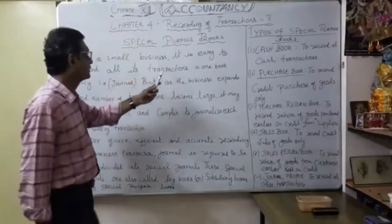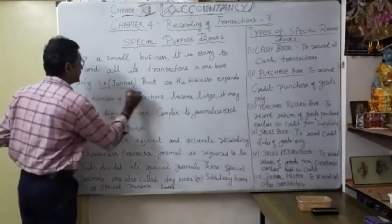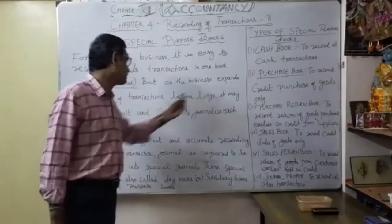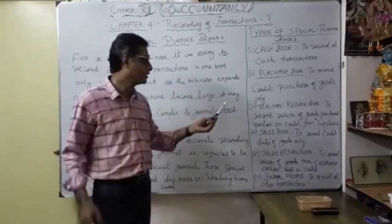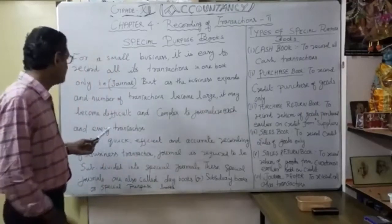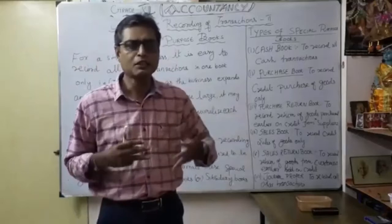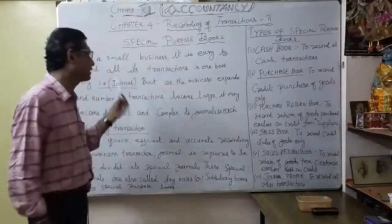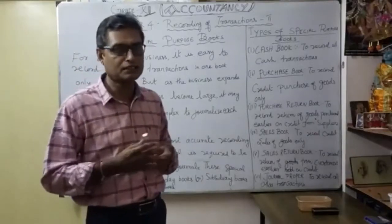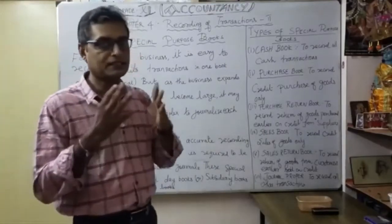For a small business, it is easy to record all transactions in one book — that is called the journal — and one book is enough. But as the business expands, the number of transactions becomes large. It becomes difficult — not only difficult but complex — to journalize each and every transaction. Suppose the business becomes expanded: per day ten transactions, thirty days, that is three hundred transactions. Apart from Sundays, that is around two hundred seventy transactions.